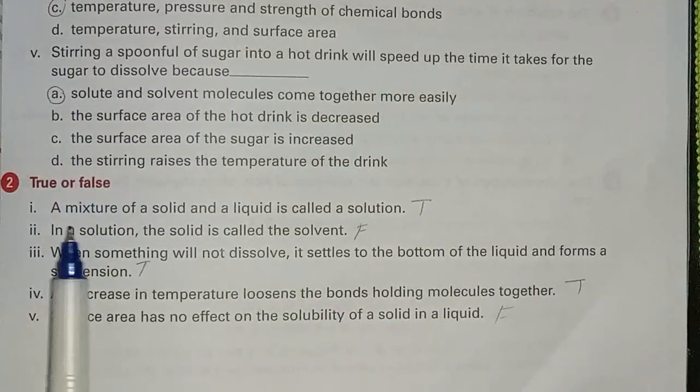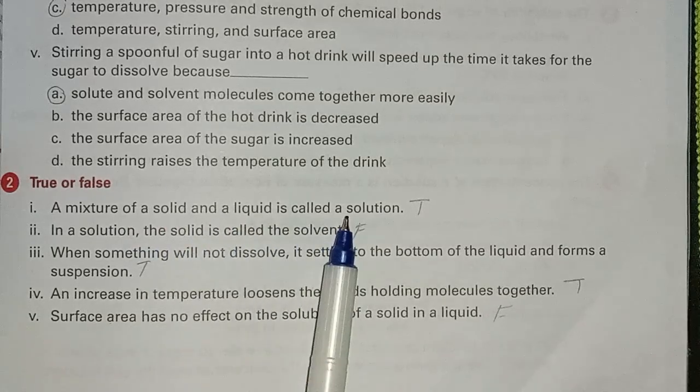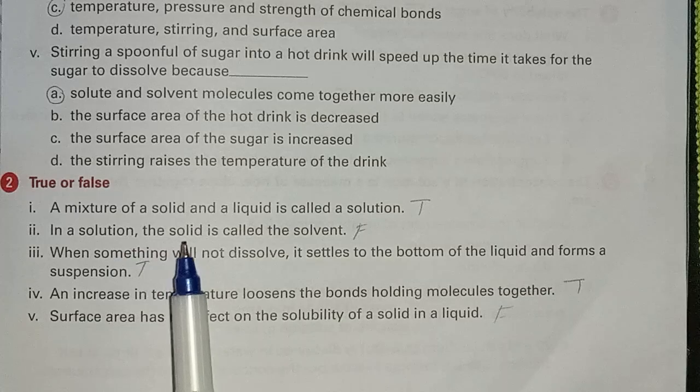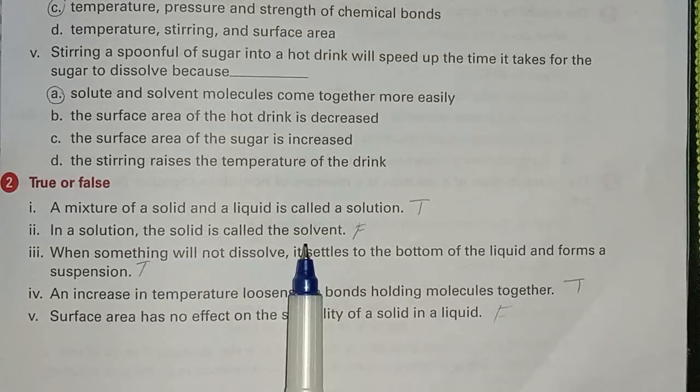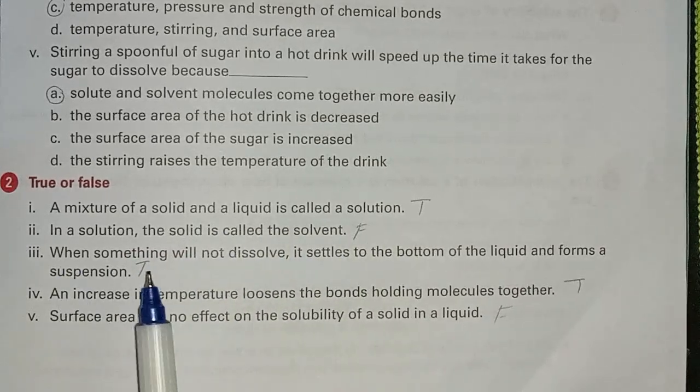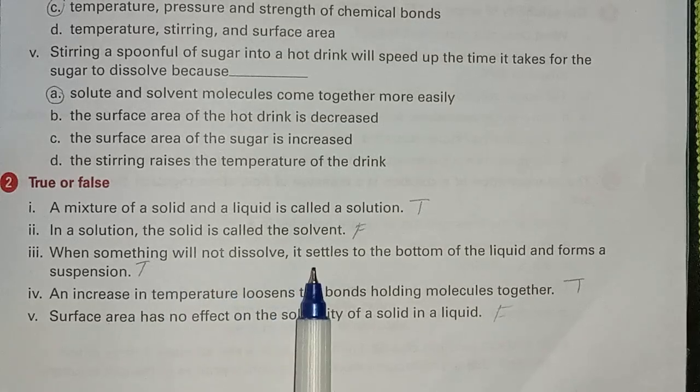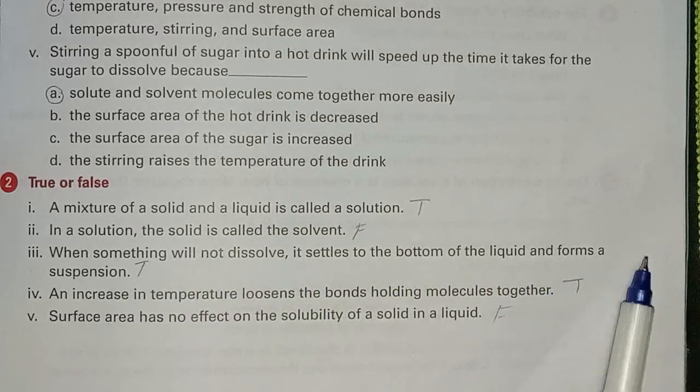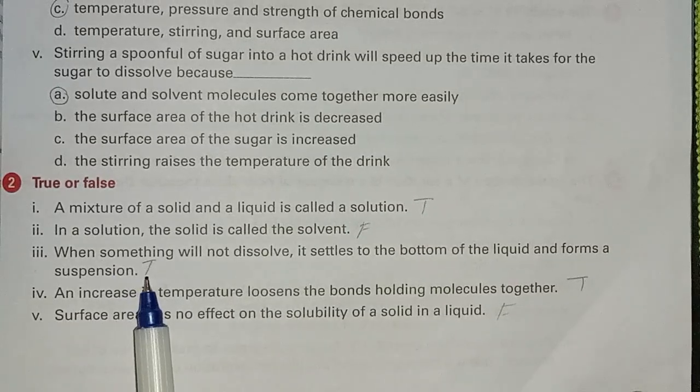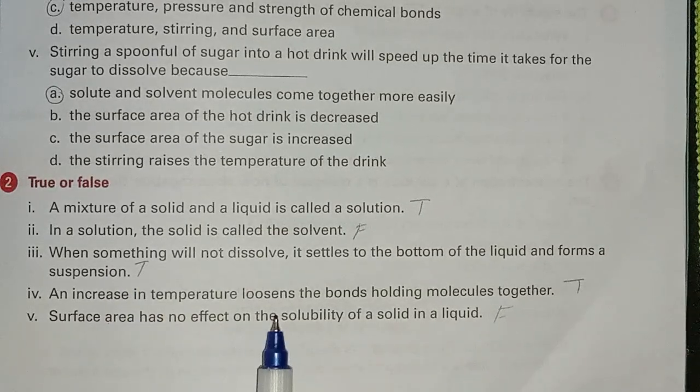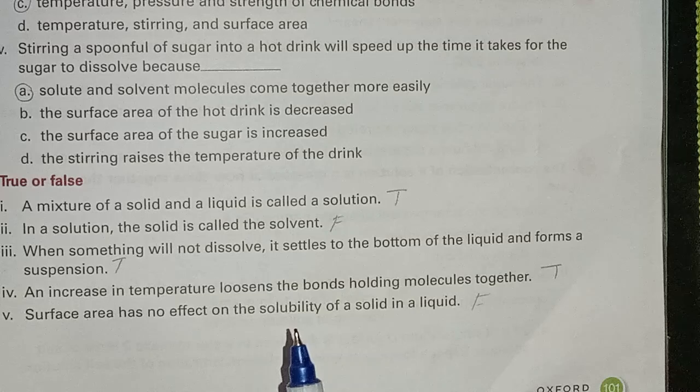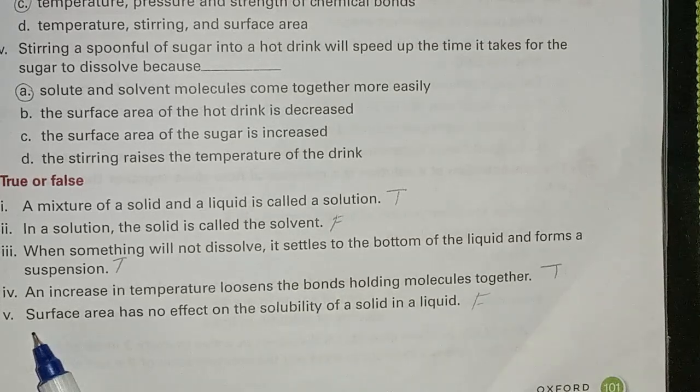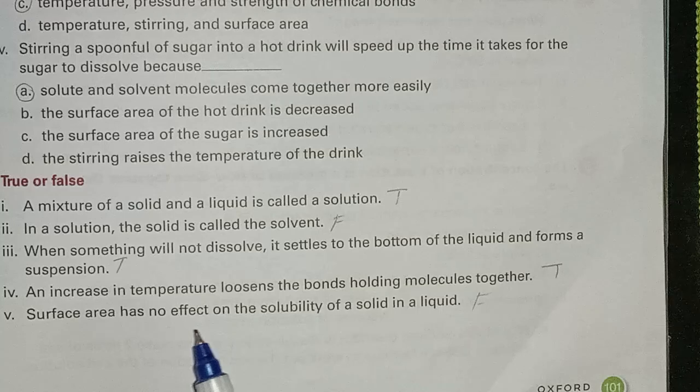Second question, true or false: A mixture of a solid and a liquid is called a solution - yes, it's true. In a solution the solid is called the solvent - no, it's false. When something will not dissolve it settles to the bottom of the liquid and forms a suspension - true. An increase in temperature loosens the bonds holding molecules together - true. Surface area has no effect on the solubility of a solid in a liquid - false.